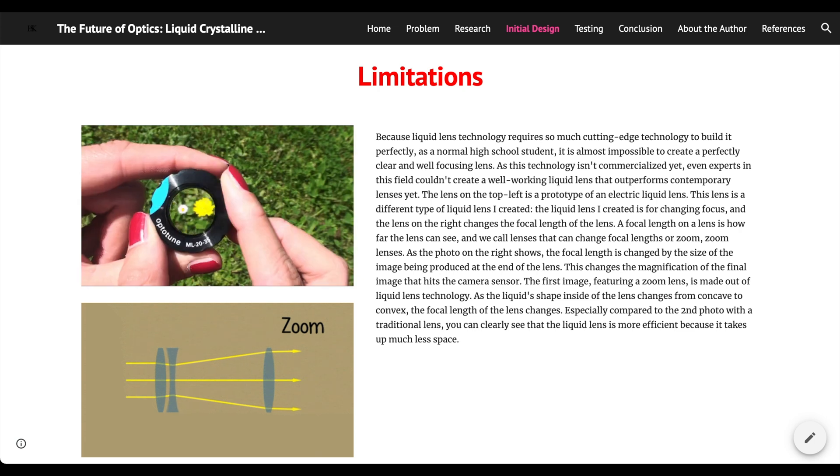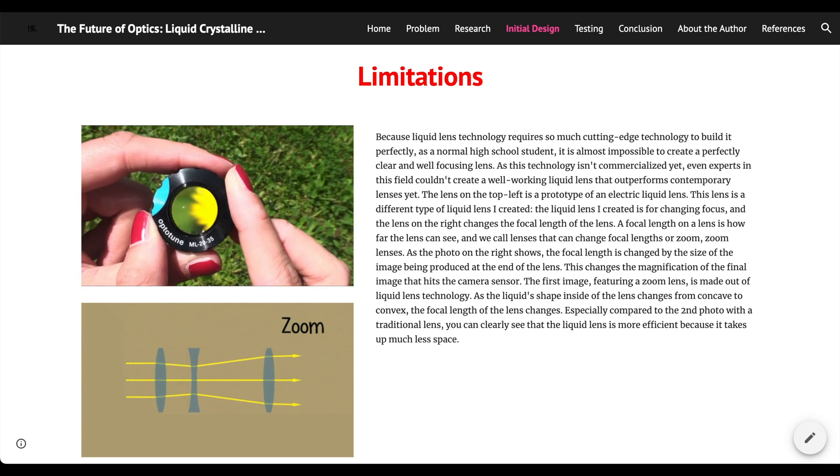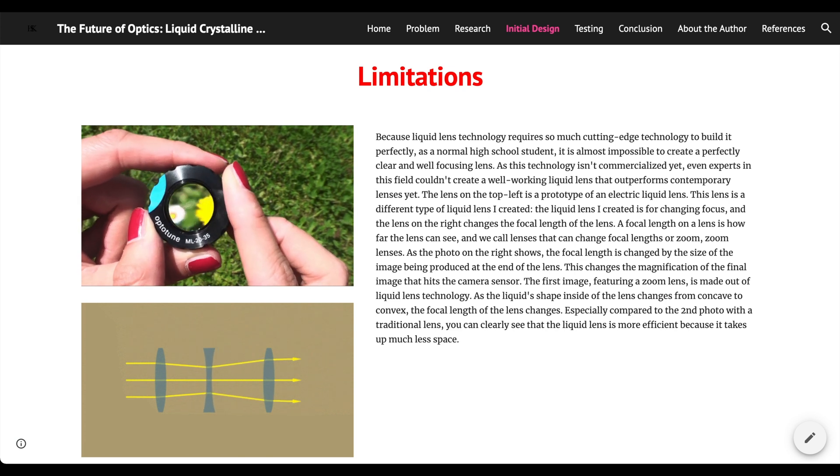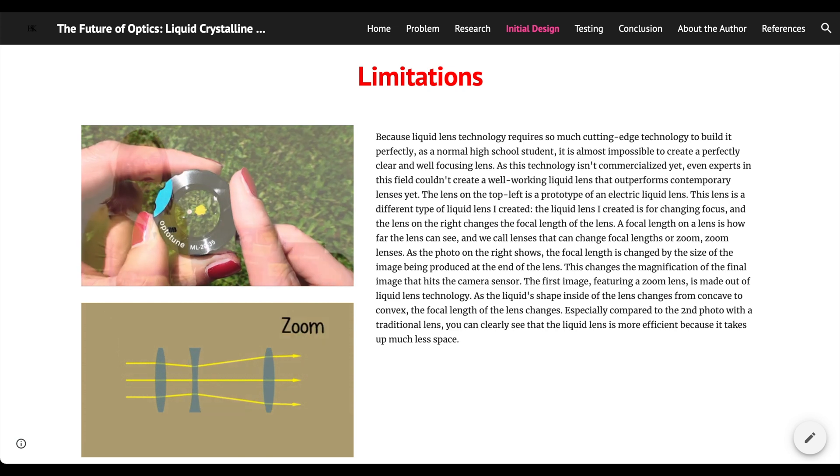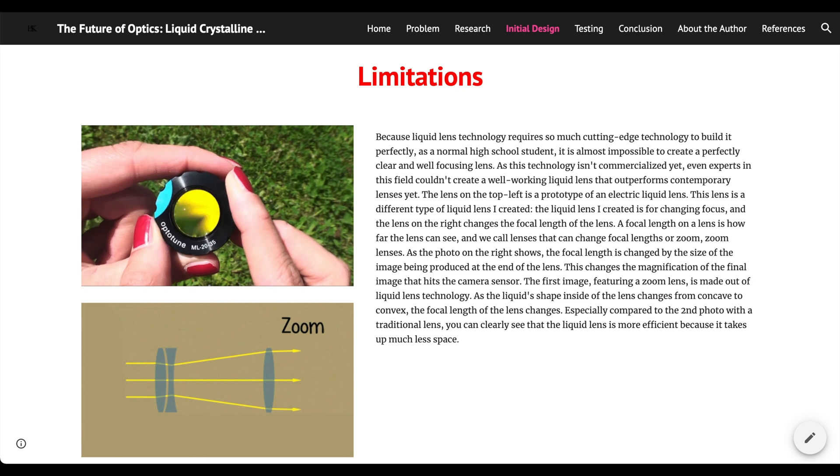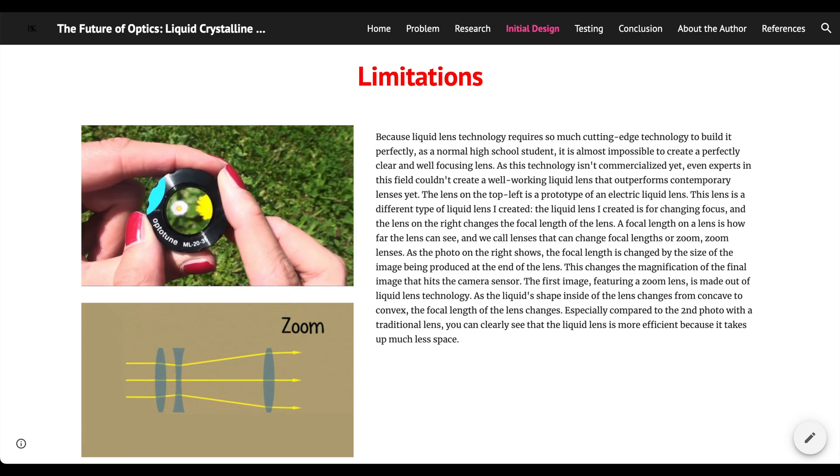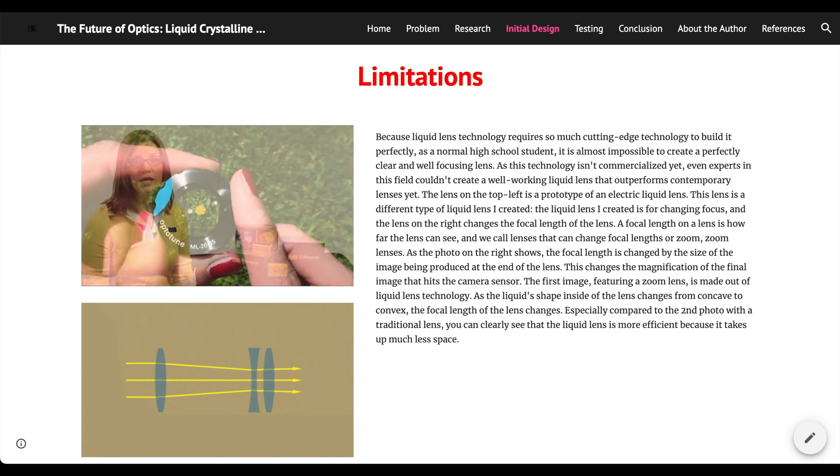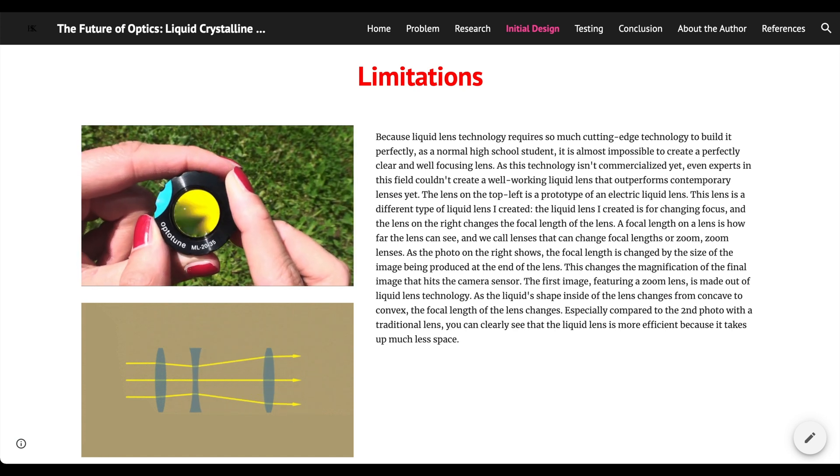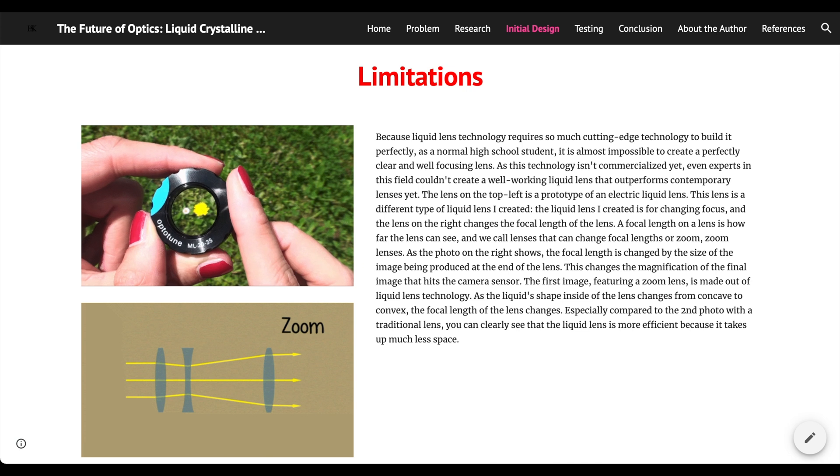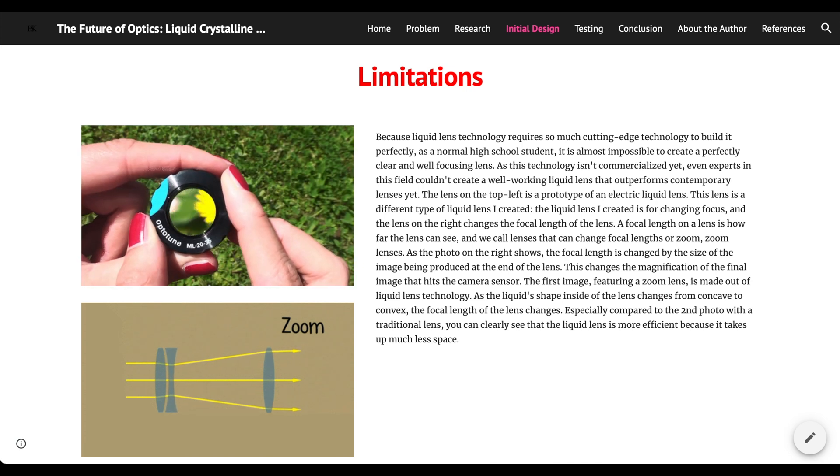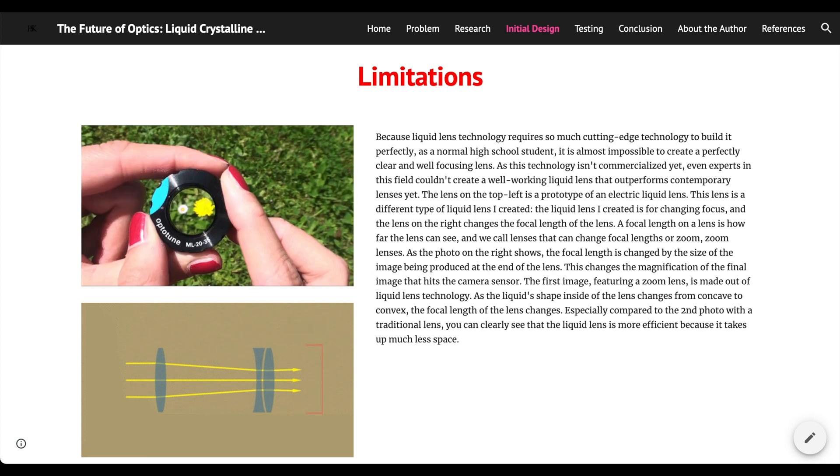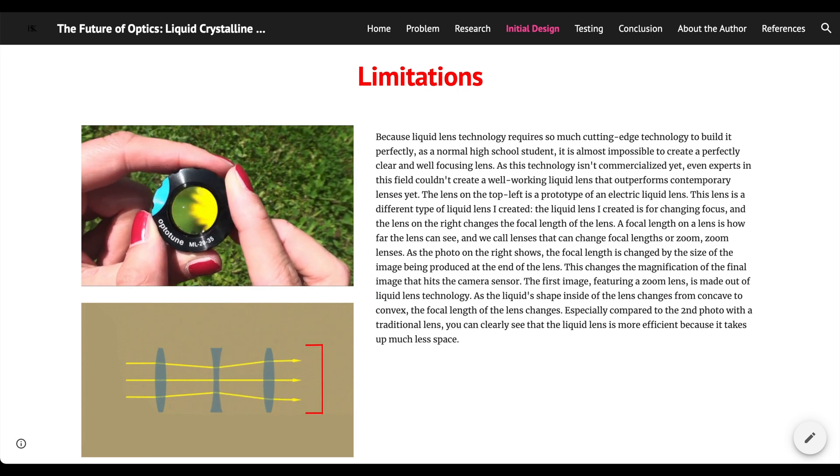The lens on the top left is a prototype of an electric liquid lens. This lens is a different type of liquid lens than what I created. The liquid lens I created is for changing focus, and the lens on the right changes focal length of the lens. This liquid lens is also tuned electrically when the lens I created changes shape mechanically. A focal length on the lens is how far the lens can see, and we call lenses that can change focal lenses, zoom lenses. As the photo on the right shows, the focal length is changed by the size of the image being produced at the end of the lens.